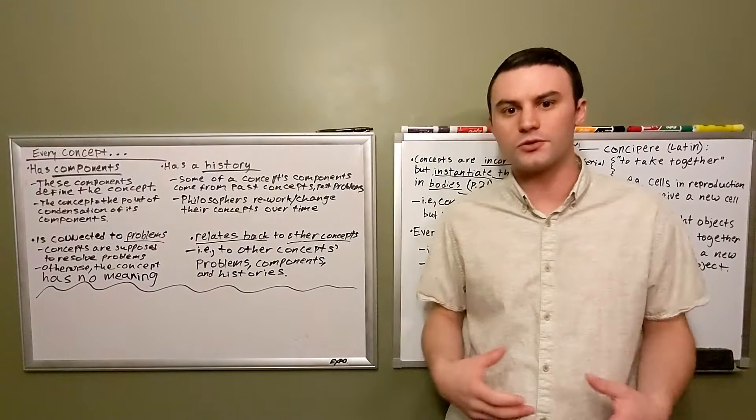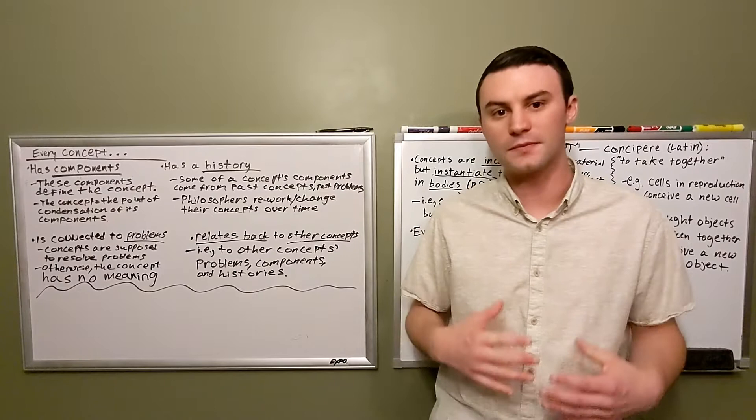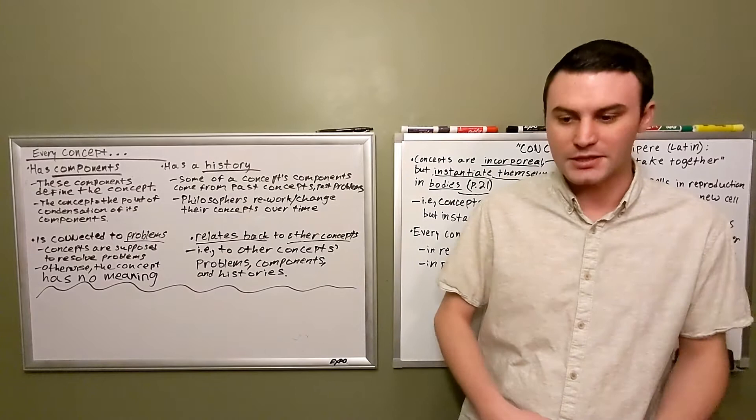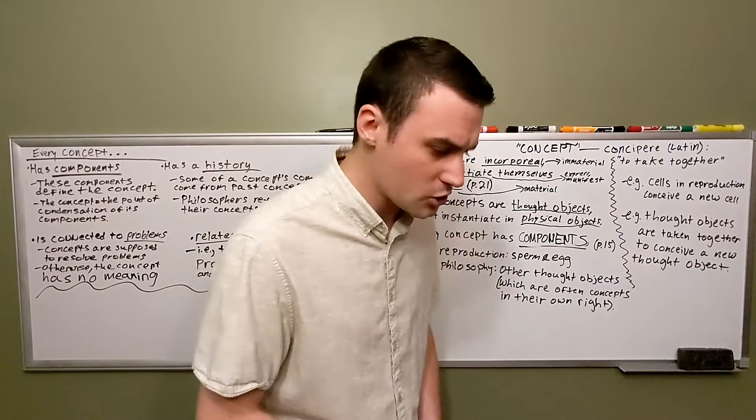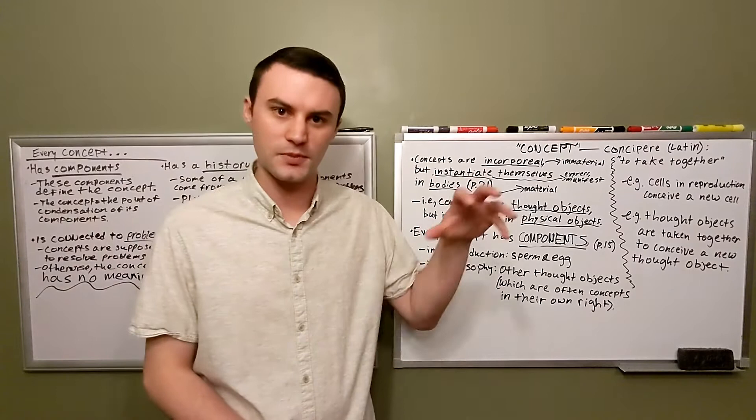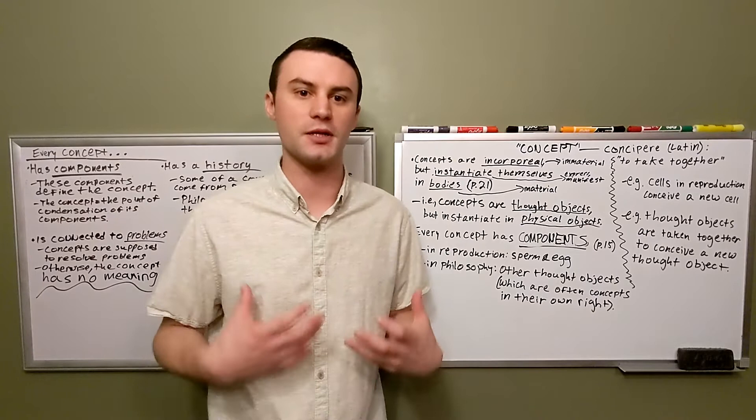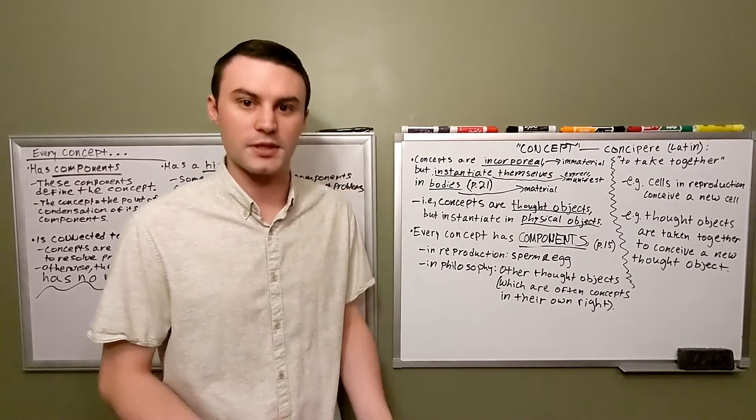So, we'll want to first understand what Deleuze and Guattari mean when they say that every concept has components, but at the same time we'll want to establish some preliminaries on the word concept, which, as of yet, we haven't really gotten a positive definition of. On page 21, Deleuze and Guattari tell us that concepts are incorporeal, but they instantiate themselves in bodies. Put more simply, this means that concepts are thought objects that instantiate or express themselves in physical objects.